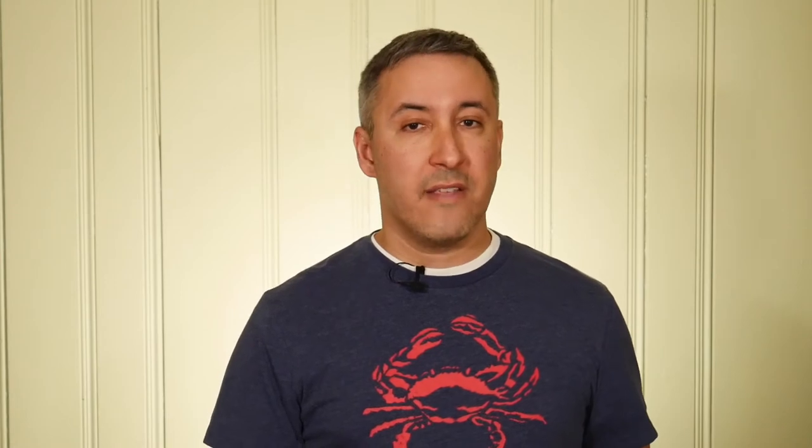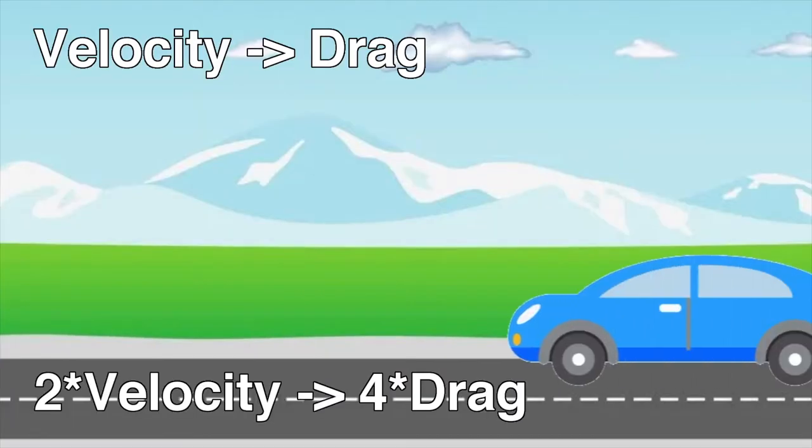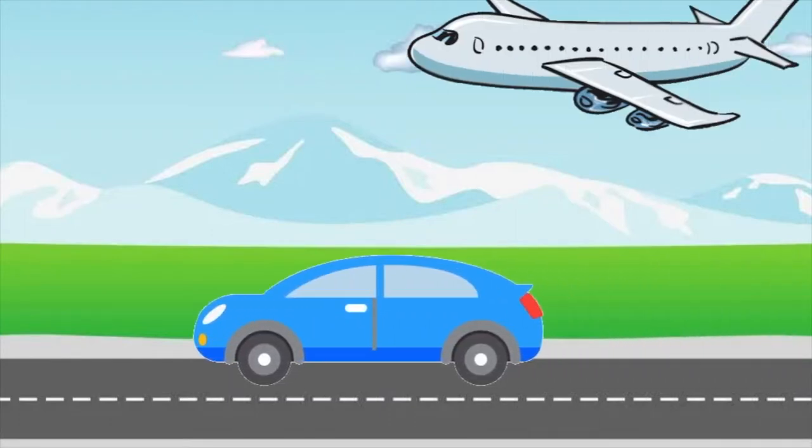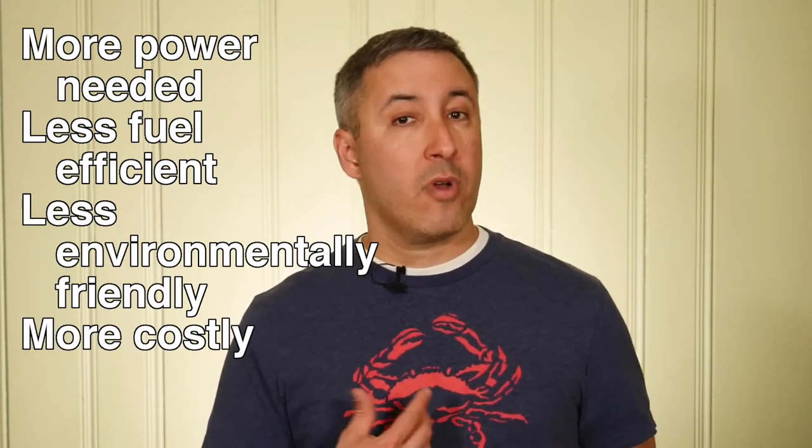If you've ever driven in a car with your hand out the window, you've experienced drag. The faster the car is moving — which is the velocity factor — the more force you'll feel against your hand. In fact, since the velocity factor is squared, if you double the car's velocity, you'll feel four times the amount of drag force on your hand. To feel the effect of area on drag, if you hold your hand perpendicular to the ground while you're driving, you'll feel more force than if you hold your hand parallel to the ground. For a powered vehicle that moves horizontally, such as an airplane or a car, the designer works to minimize the coefficient of drag. The more drag on the vehicle, the more power is needed to overcome that drag, making it less fuel efficient, less environmentally friendly, and more costly to its owner.